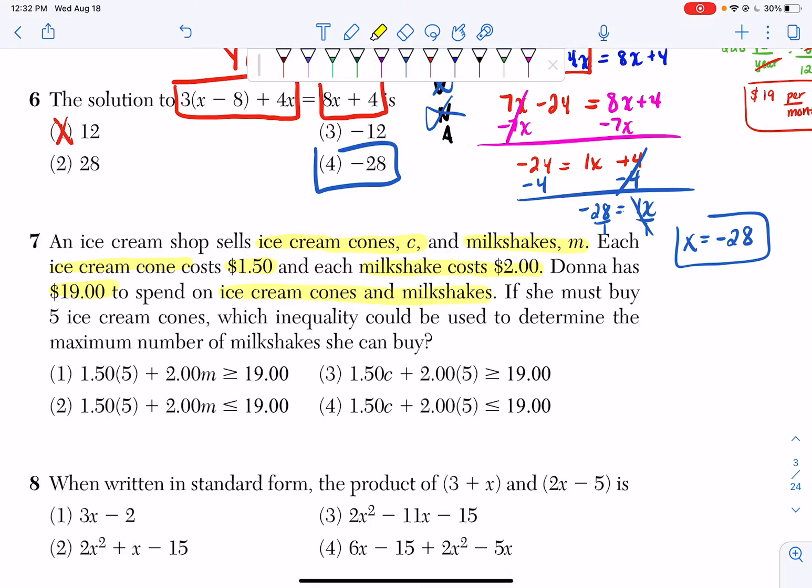Donna has $19 to spend on ice cream cones and milkshakes. If she must buy five ice cream cones, which inequality could be used to determine the maximum number of milkshakes she can buy?